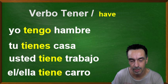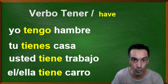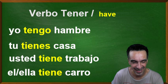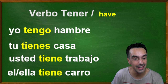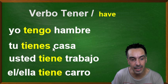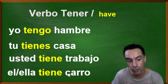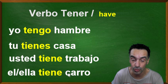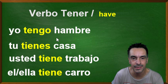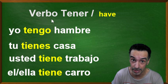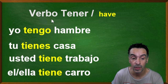You can also add the articles — los artículos — like la casa, el trabajo, un carro or el carro. I'm just showing you the very basics of the verb 'have,' tener.